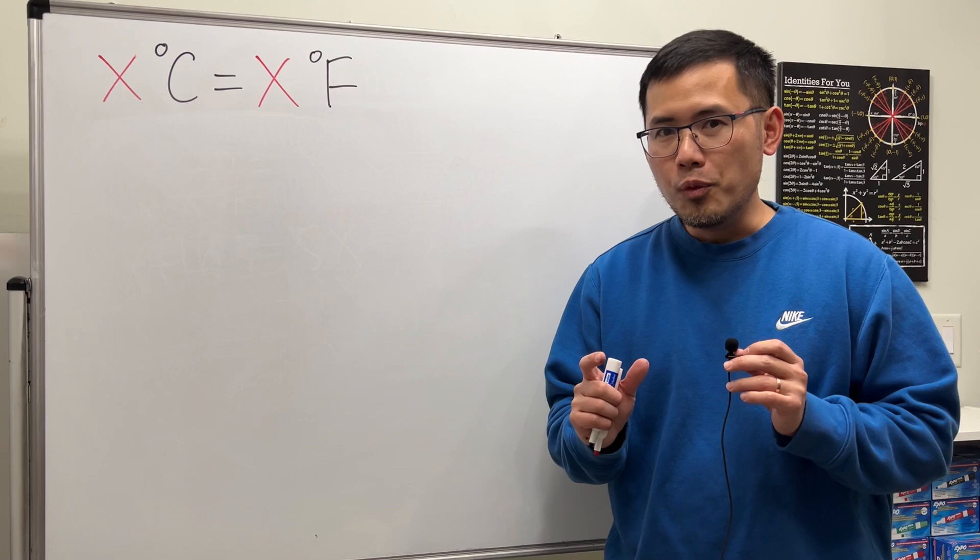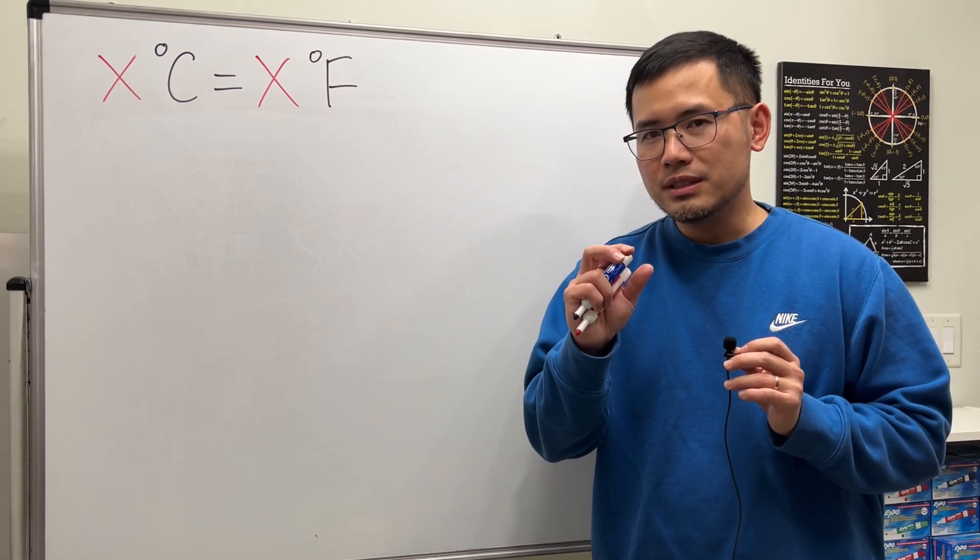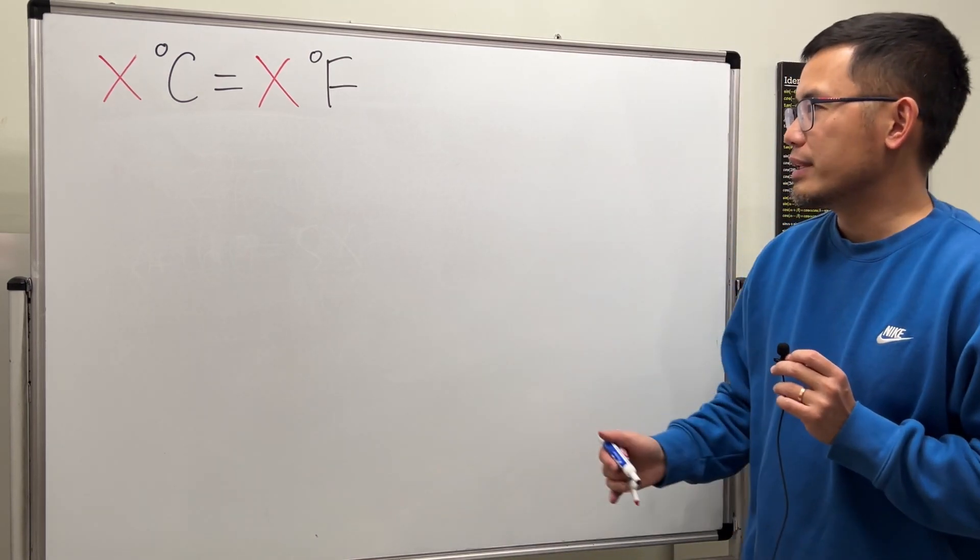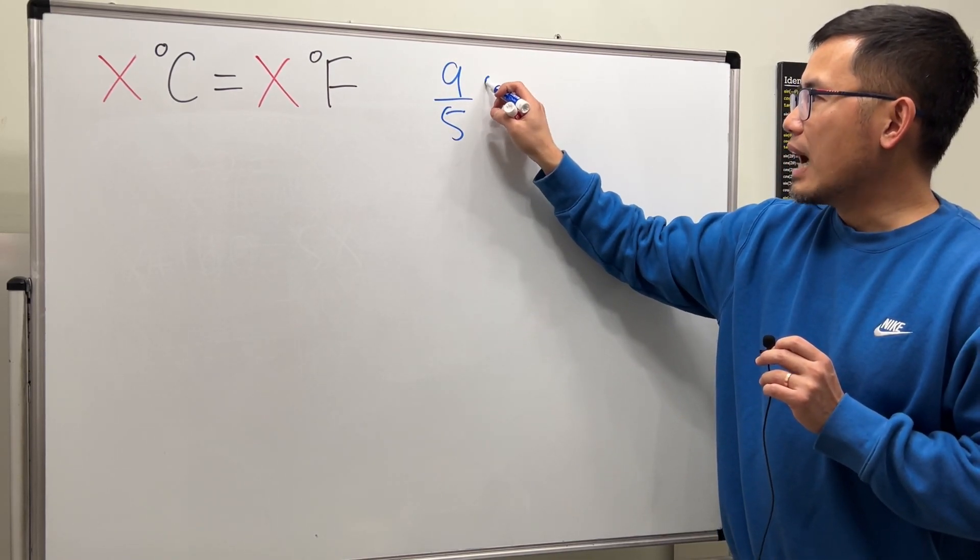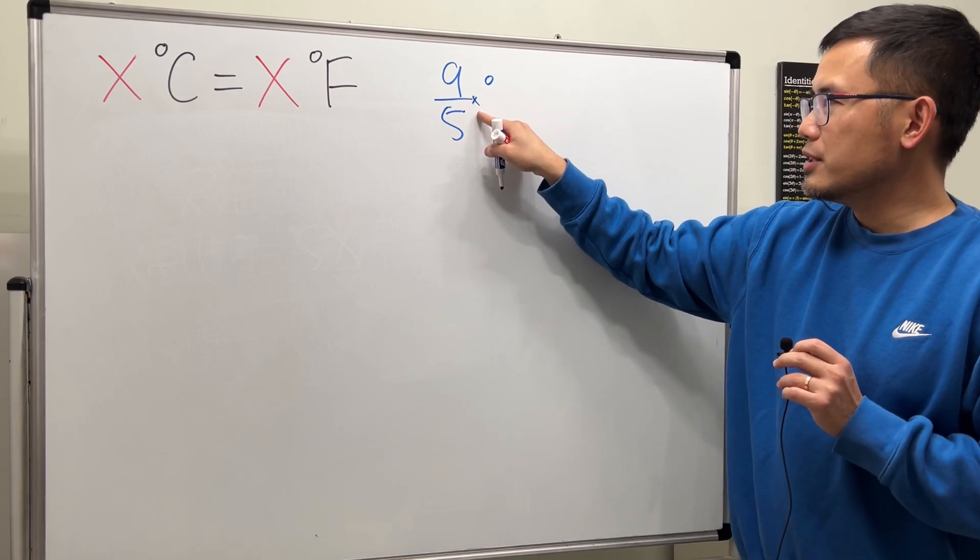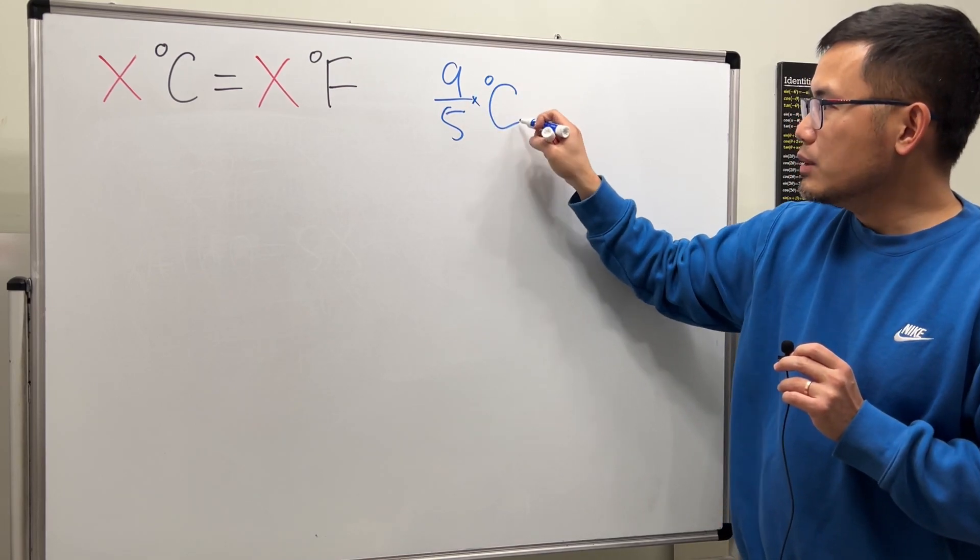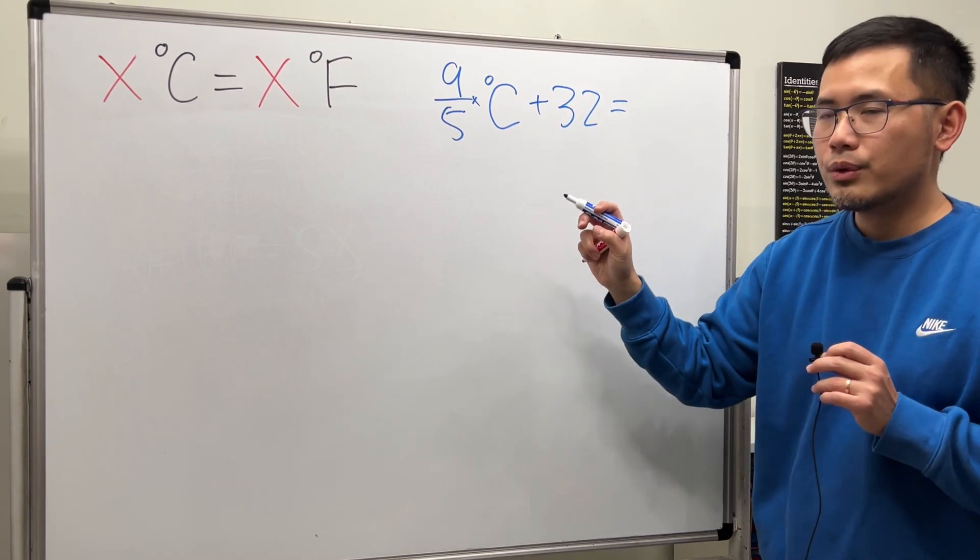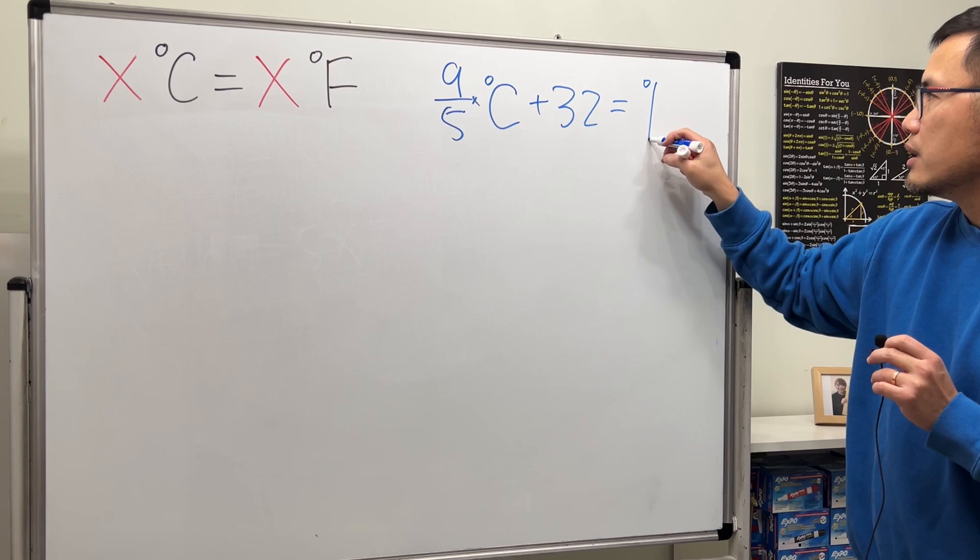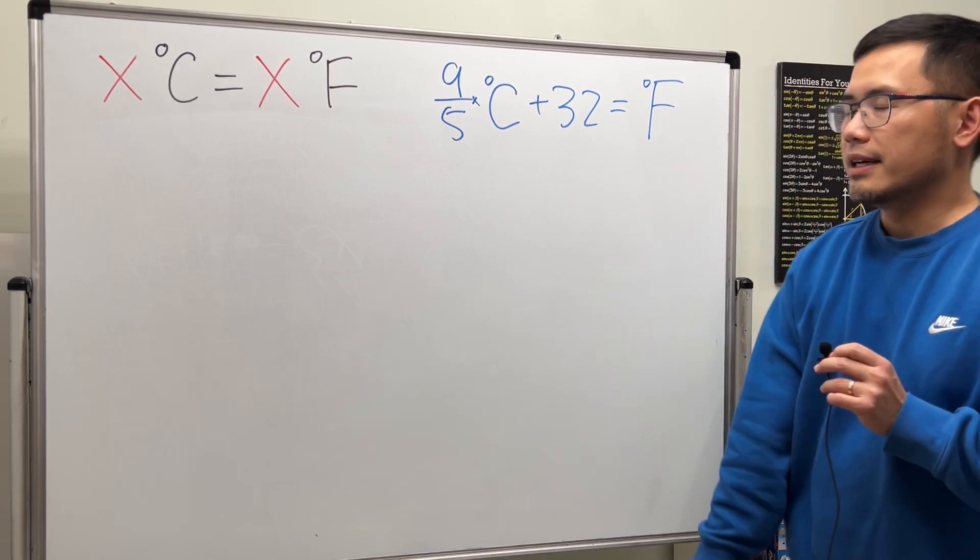Of course, we will need a formula for converting Celsius to Fahrenheit, and let me write that down for you. What we do is we take 9 over 5 times the Celsius, and after that we add 32. And that will give you the temperature in the Fahrenheit measure.